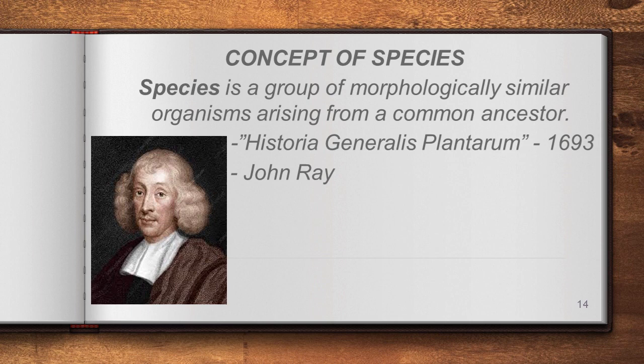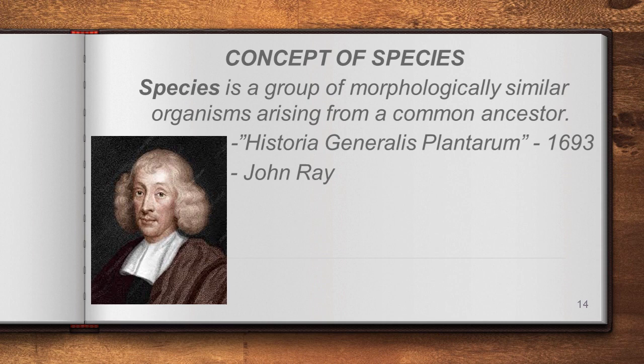The next topic is the concept of species. In the last class we said a species is a group of morphologically similar organisms that interbreed among themselves and produce fertile offspring. Here, we will look at the definitions given by various scientists.